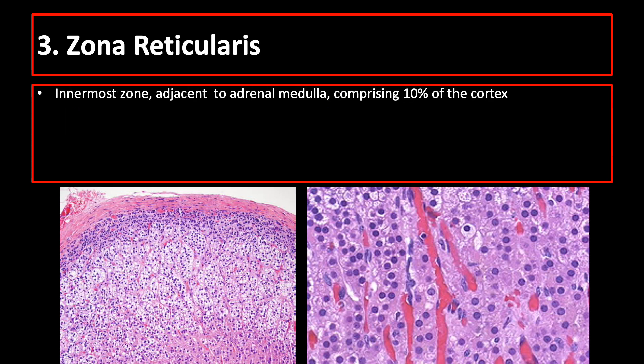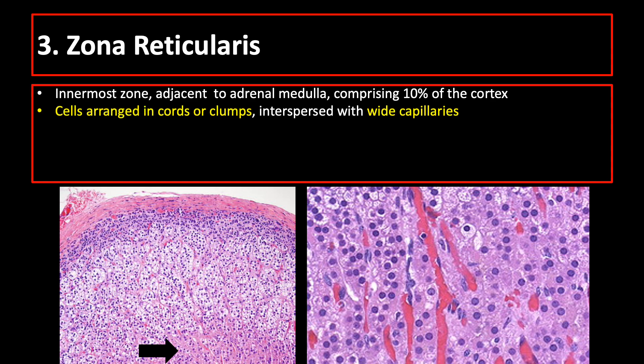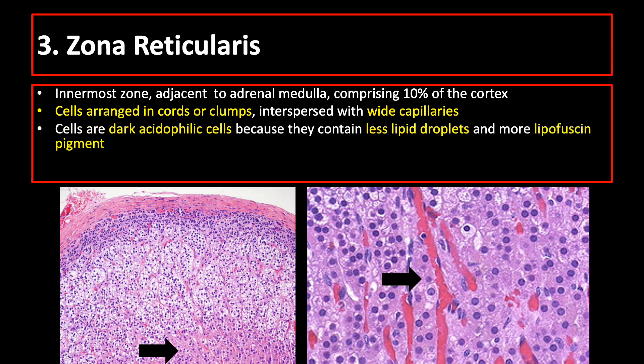The last zone is the innermost zone, adjacent to the adrenal medulla, and comprises about 10% of the cortex. The cells are arranged in cords or clumps interspersed with wide capillaries. The cells are heavily stained because they contain less lipid droplets and more lipofuscin pigment. This zone primarily produces sex steroids.